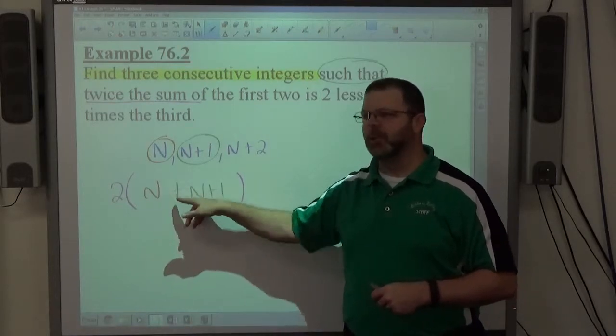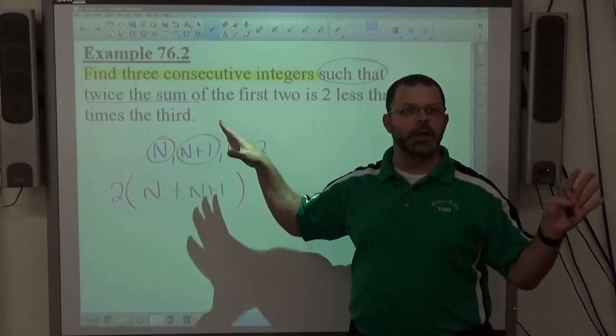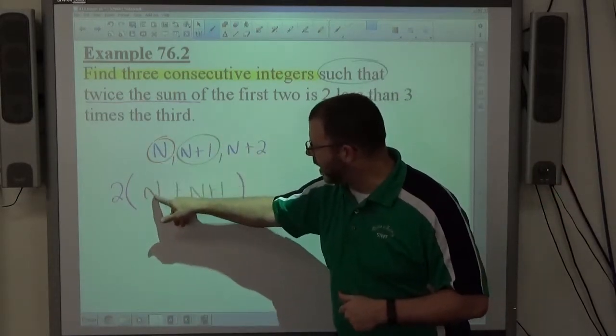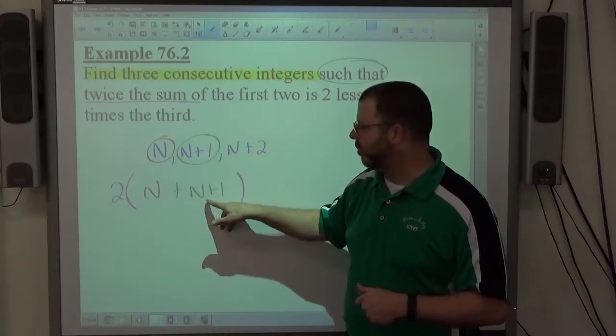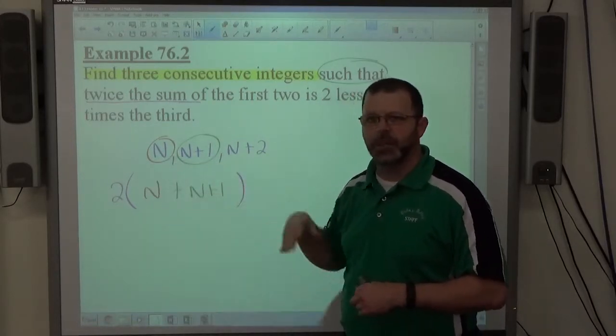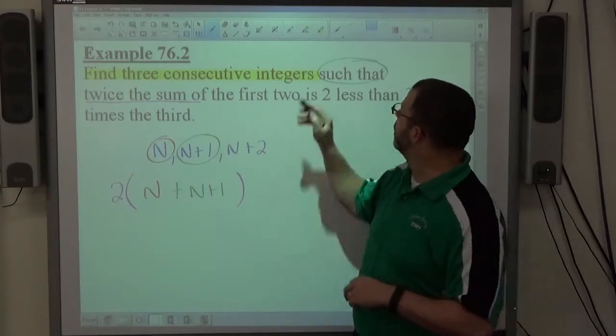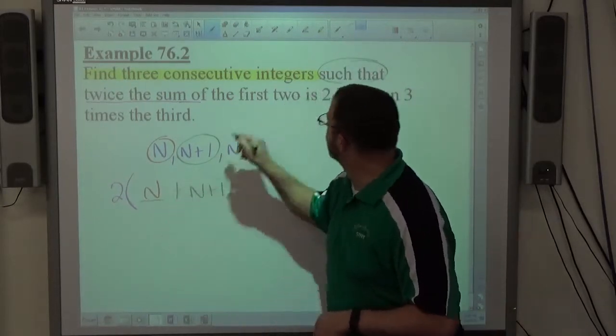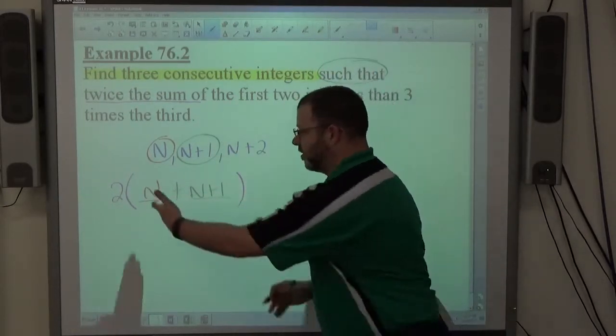I've seen people just put n plus 1 because it seems like too many n's are happening here. But again, the first one is n added to the second one, n plus 1. We're using the same letter to represent two different things to make sure that you treat them as they are. So here's the first added to the second. So that's the sum of the first two. We're doing twice that sum.